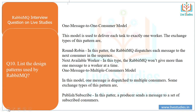Another question: list the design patterns used by RabbitMQ. In the one message to one consumer model, each task is delivered to exactly one worker. The exchange type for this pattern is round robin — RabbitMQ dispatches each message to the next consumer in sequence and will not give more than one message to a worker at a time. In the one message to multiple consumers model, one message is dispatched to multiple consumers. The exchange type is publish-subscribe, where a producer sends a message to a set of subscribed consumers.